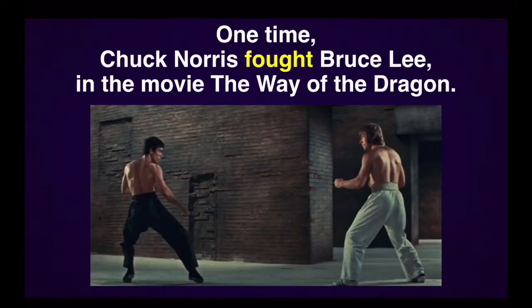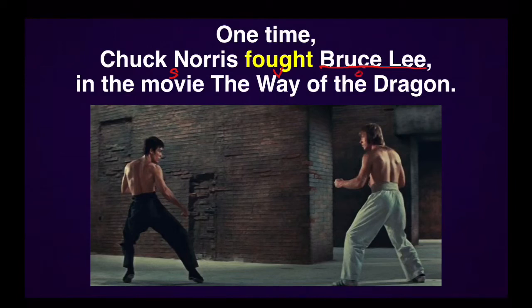'One time Chuck Norris fought Bruce Lee in the movie The Way of the Dragon.' Our verb here is fought — the past tense of fight — and our subject is Chuck Norris. Does the information after the verb tell us who or what Chuck Norris fought, or does it tell us some other information like where, when, why, or how? Chuck Norris fought — who did he fight? He fought Bruce Lee. That answers the question of who he fought. So Bruce Lee is the object of fight, which means we have a transitive verb.